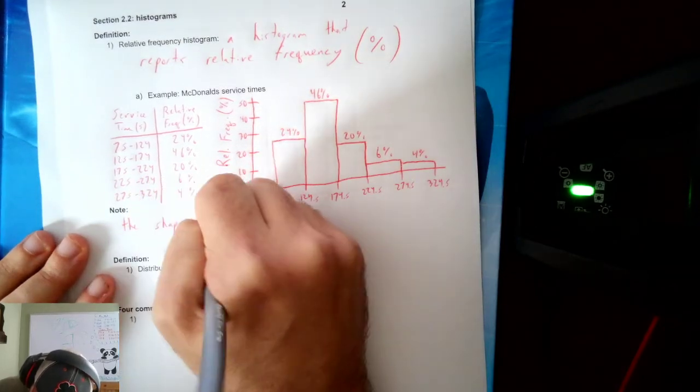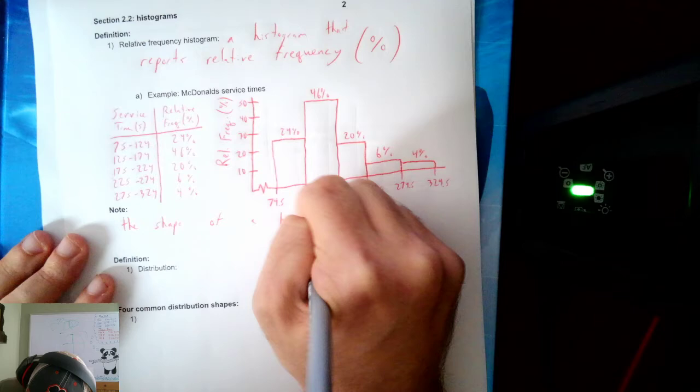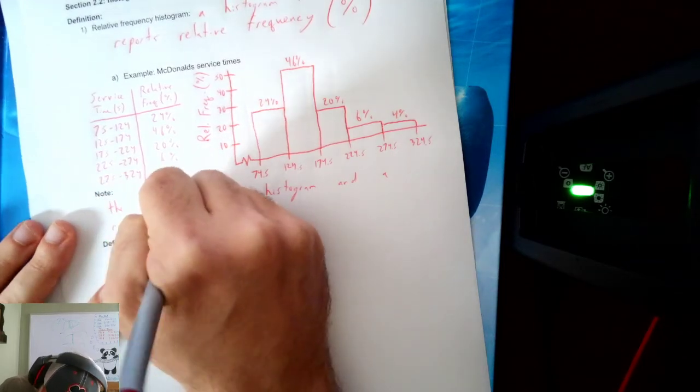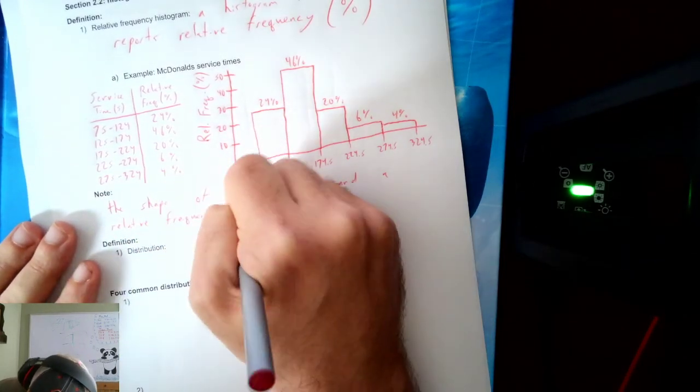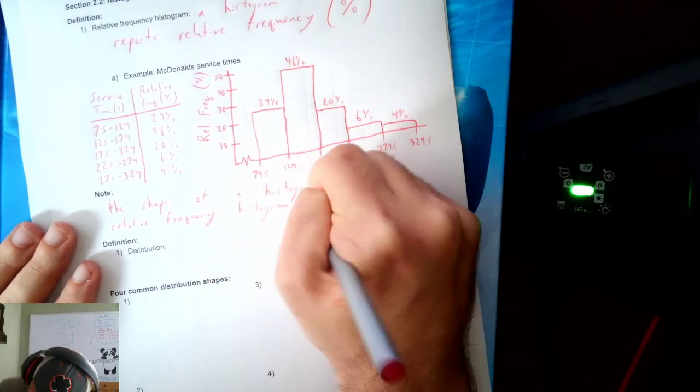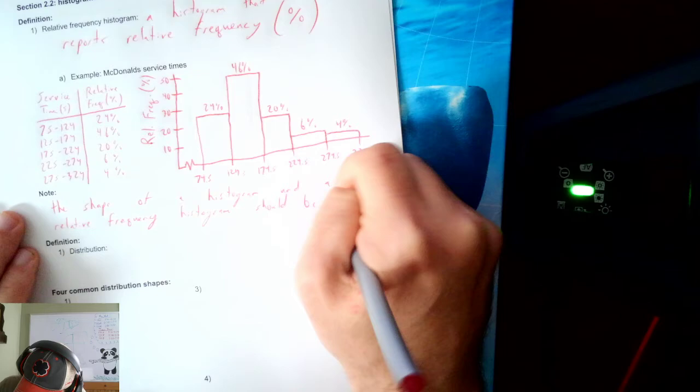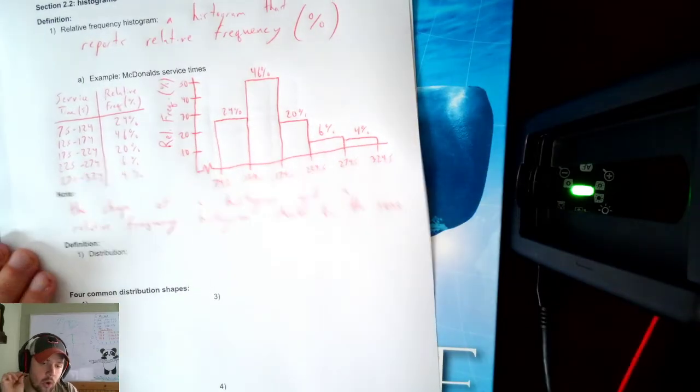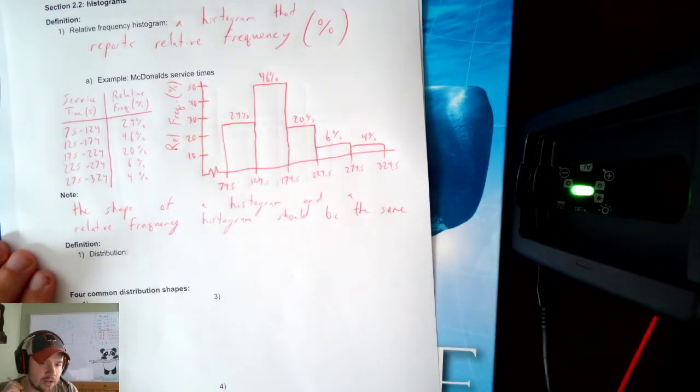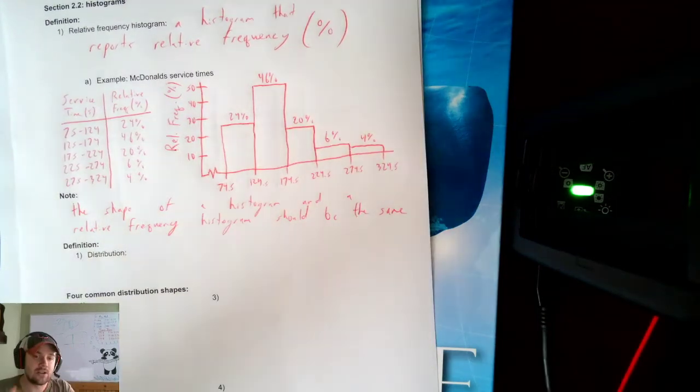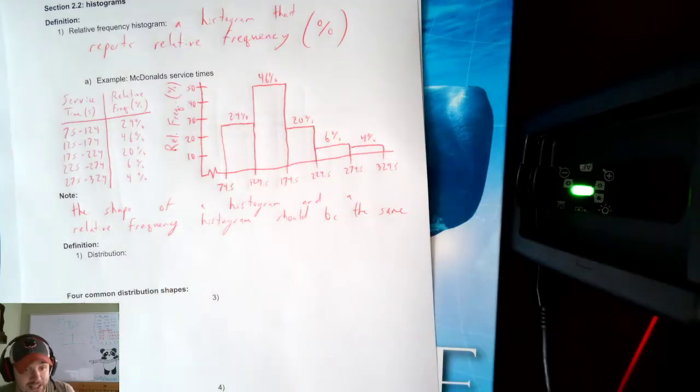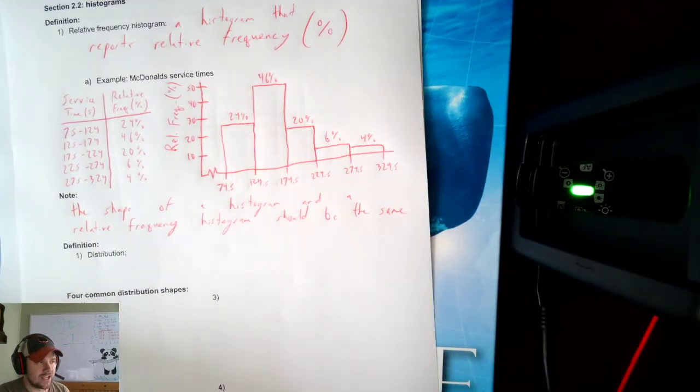I hand drew them. The book has nice computer generated images that look exactly the same. They should be the same shape. The shape of a histogram and a relative frequency histogram should be the same. Because you're graphing the same data. You're just changing the measurement from a whole frequency number to a percentage. You're not changing the data in any way. The shape doesn't change.